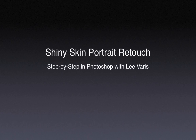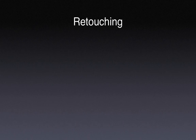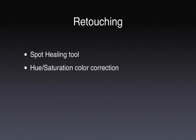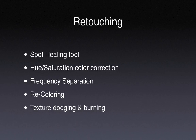Welcome to Shiny Skin Portrait Retouch in Photoshop. I'm Lee Varis, your host for this step-by-step tutorial. We're going to examine a common problem in portraiture where the subject has somewhat oily skin and we want to tone down shiny highlights. This tutorial will examine the spot healing tool, a hue/saturation color adjustment for uneven skin tone, and the primary technique we'll explore: frequency separation. We'll do some recoloring and dodging and burning to even out skin texture and re-sculpt the face.